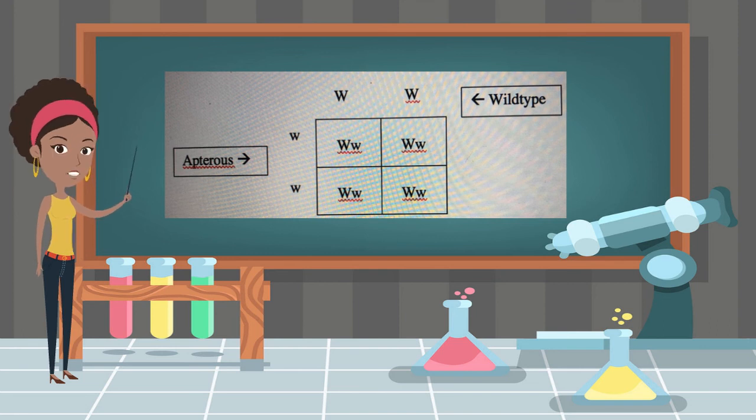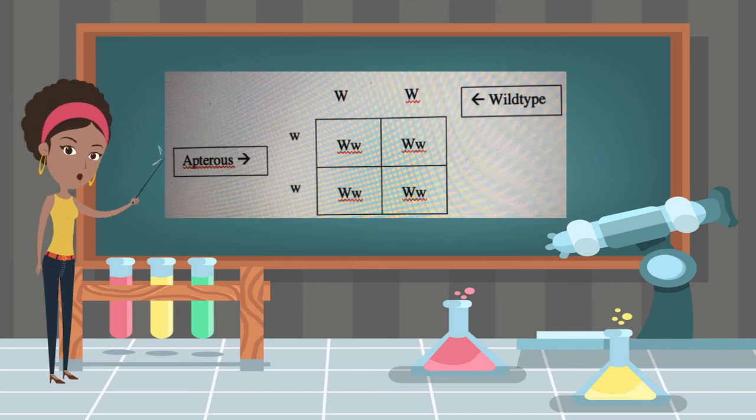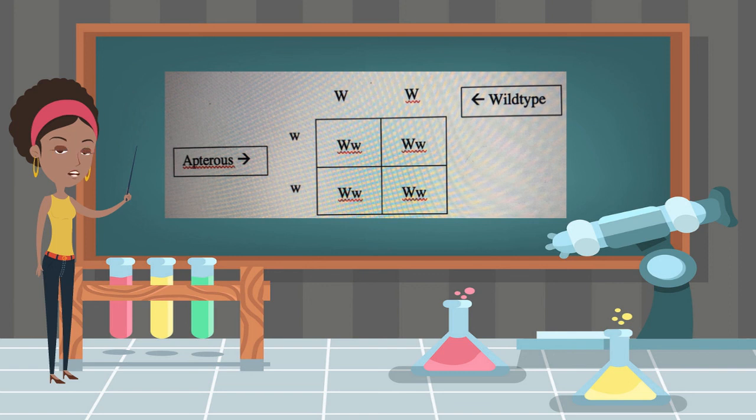When the F2 progeny were hatched, a majority of the flies still had wings, however, a small portion of the flies had no wings. This cross represents the F2 progeny.